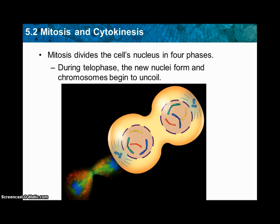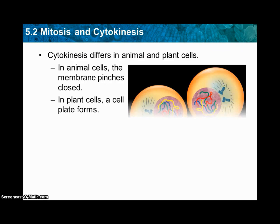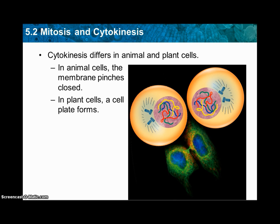Lastly, in cytokinesis, the membranes start to pinch in animal cells, and a plate forms in plant cells because they have the cell membrane which keeps it all together. The plate pinches it off, and in animal cells it separates and pinches apart, which you can see in the picture. Then you have two complete identical cells. If there are any questions about this just let me know, and see you during section 5.3.